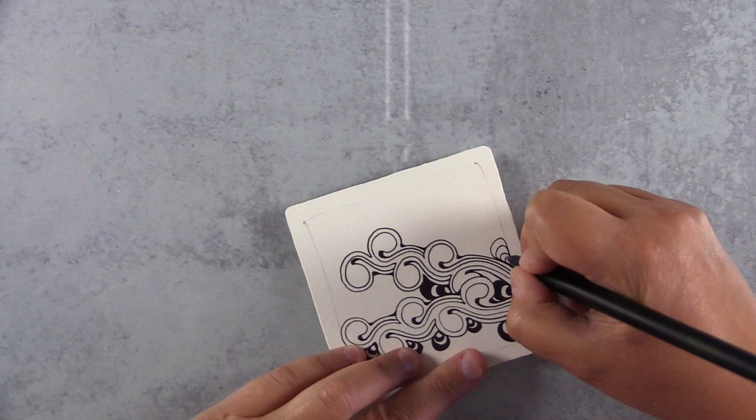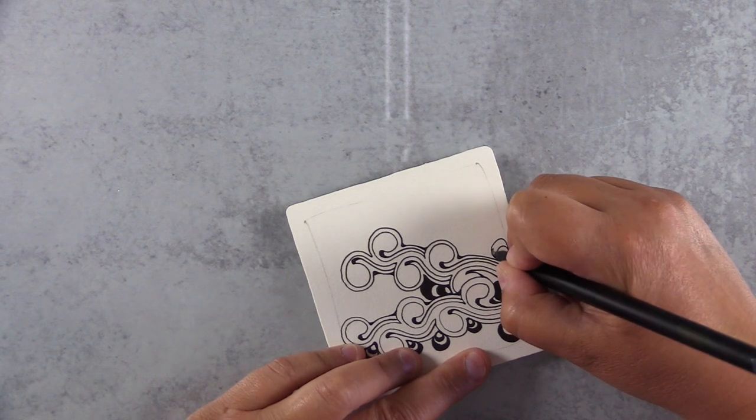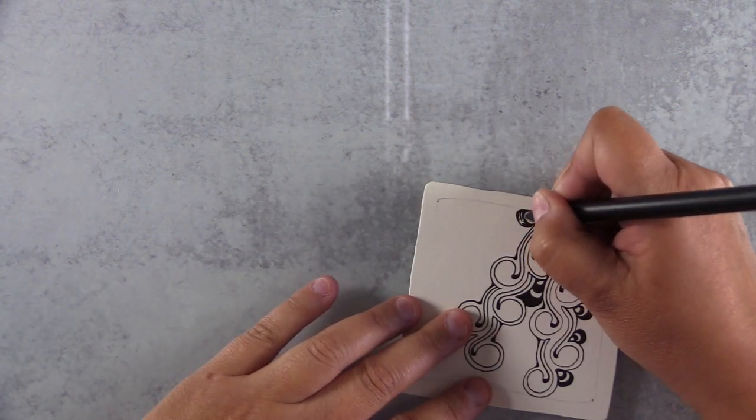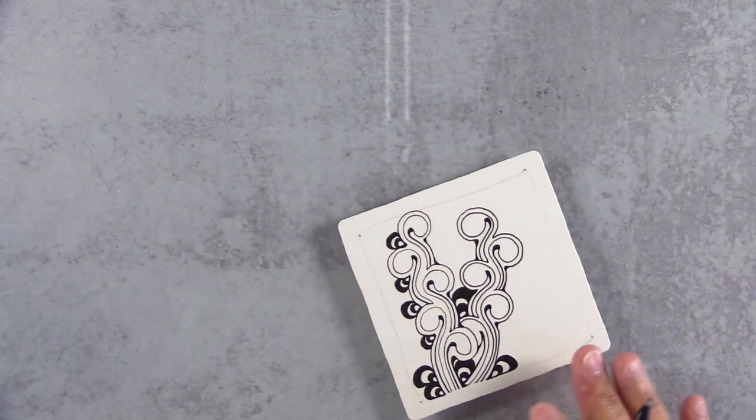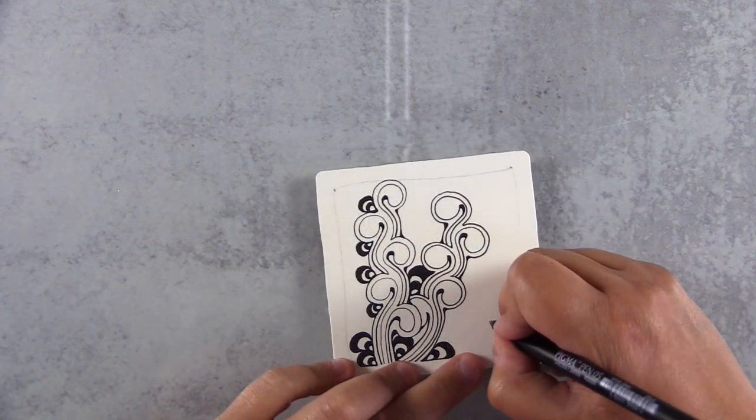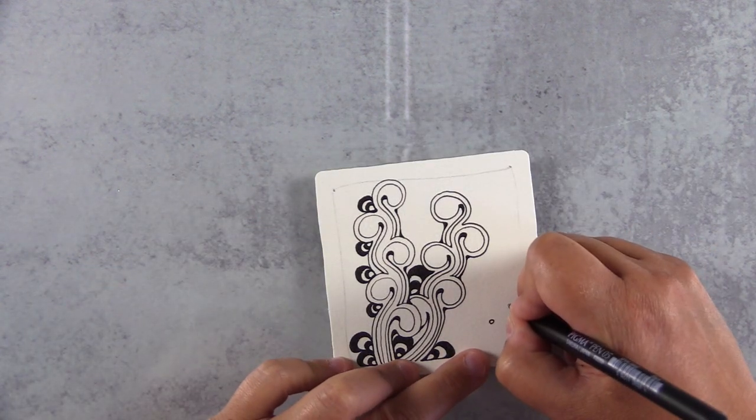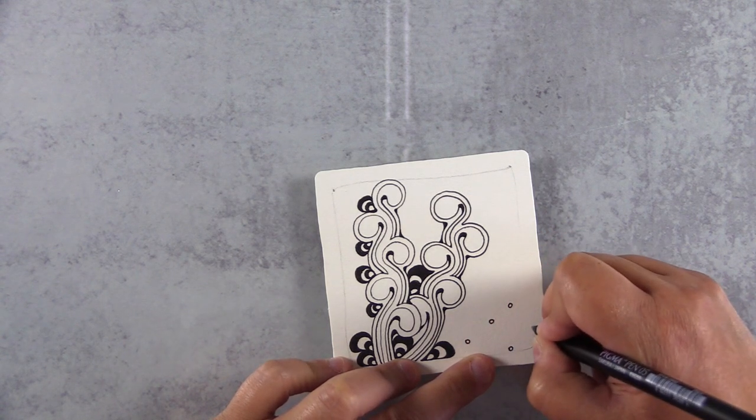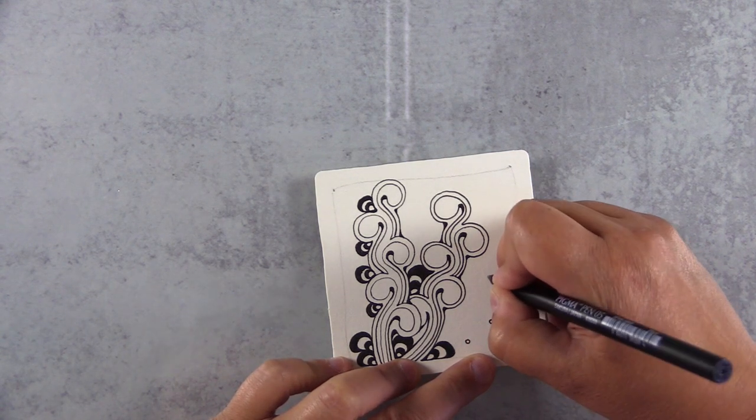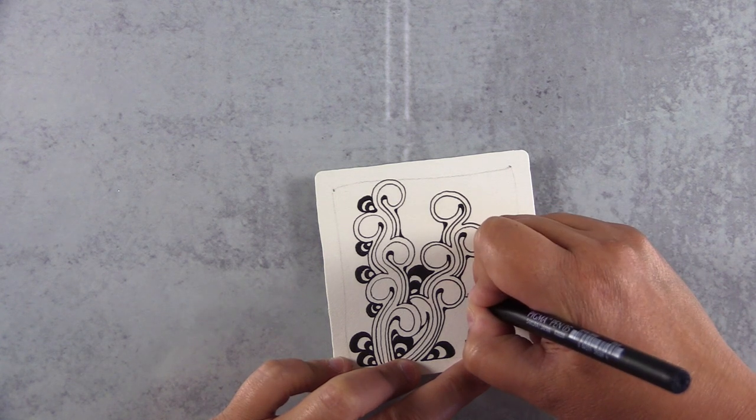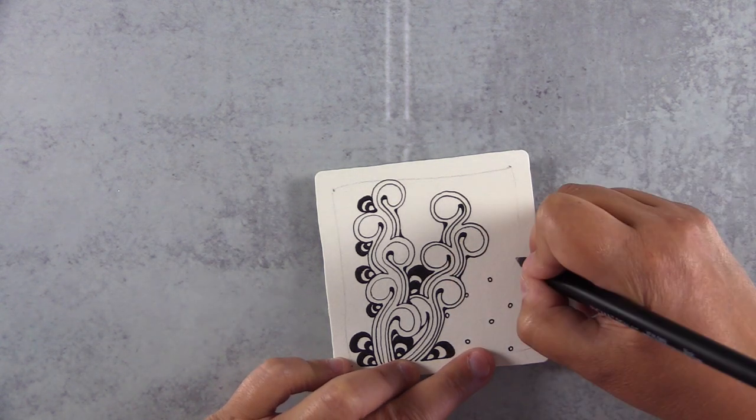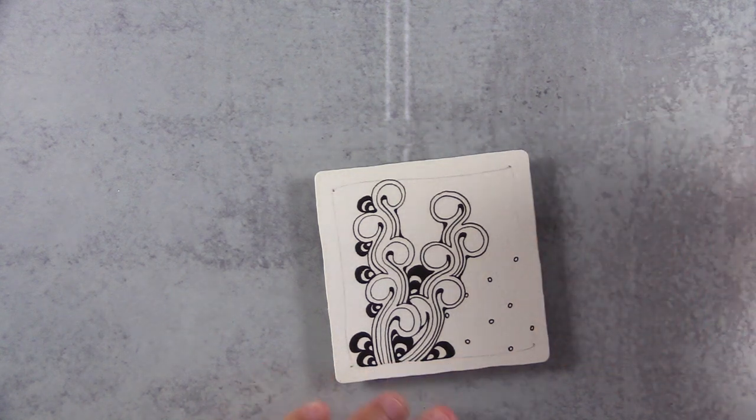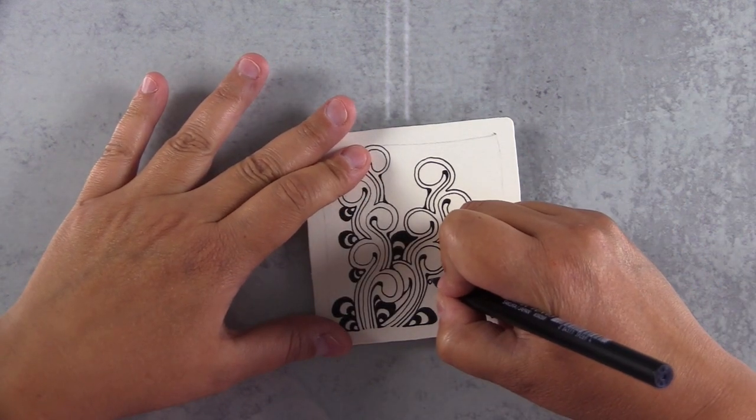And the premise behind it is that you learn these very simple patterns. Each Zentangle pattern has about one to five steps. Once you know those steps, you don't have to think about the next thing that you're going to draw. Because of that, you can just fall into this relaxing meditative state because you're just kind of going on autopilot. You don't have to think about the next thing.